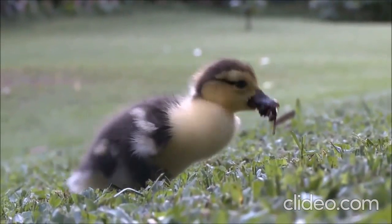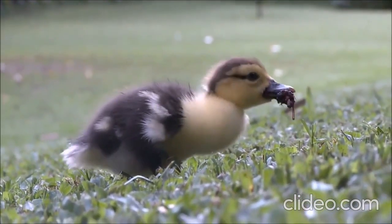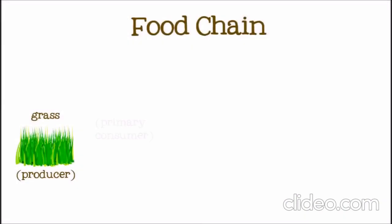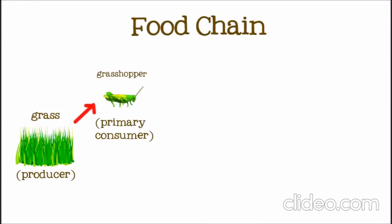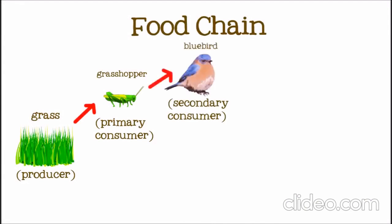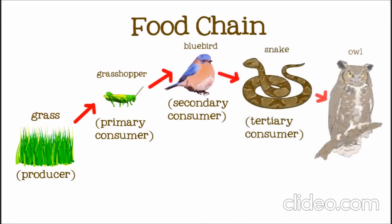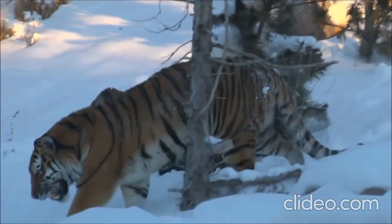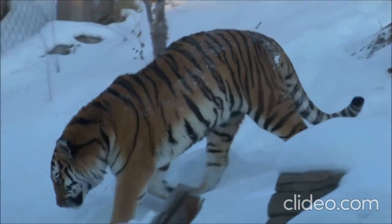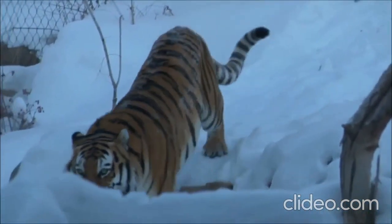Let's take a look at a longer food chain that also begins with grass. This time, let's make our primary consumer a grasshopper. The grasshopper eats the grass and then gets eaten by a secondary consumer, a bluebird. Then the bluebird gets eaten by a tertiary, or third-level consumer, a snake. The snake is eaten in turn by an owl. The owl is the apex predator in this food chain. Apex predators are not hunted and eaten by any animals — we say that they are at the top of the food chain.